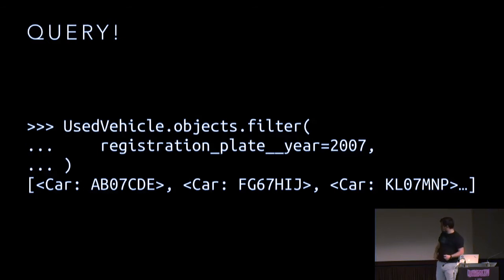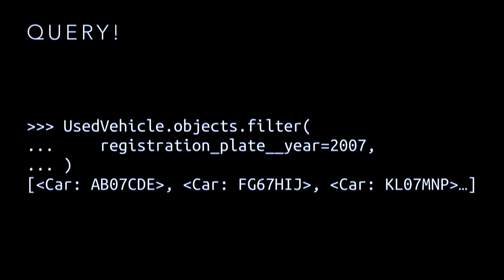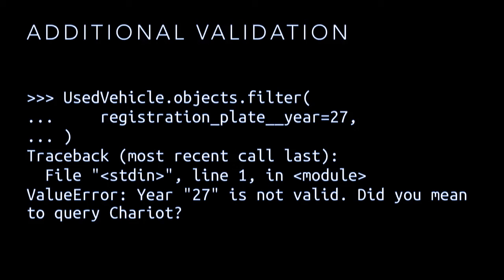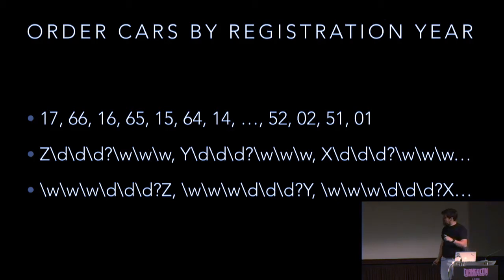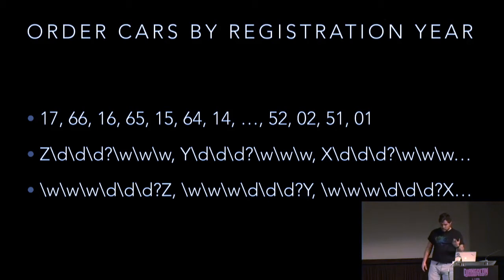You might want to do this query in many places, and you might want to add sensible validation logic — so if you try to get cars made in the year 27, you probably meant chariots instead of cars. Further lessons on UK registration plates: before 2001 we had a different system where a letter at the beginning determined which half-year the car was manufactured in, then two or three numbers, then three letters. We want to be able to order all of these registration plates by when they were created.